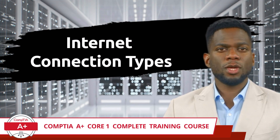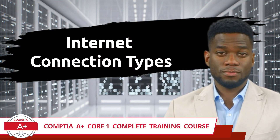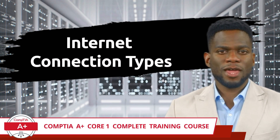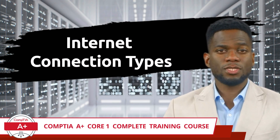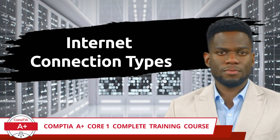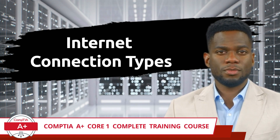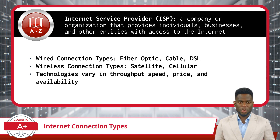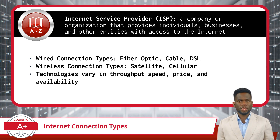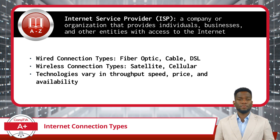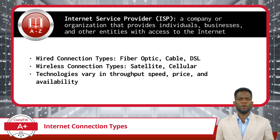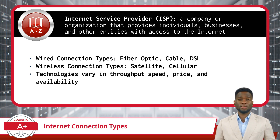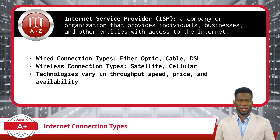CompTIA A Plus Core 1 Complete Training Course, Exam Objective 2.7: Compare and Contrast Internet Connection Types, Network Types, and Their Features. An Internet Service Provider, or ISP, is a company or organization that provides individuals, businesses, and other entities with access to the Internet. ISPs are responsible for connecting customers to the Internet through various technologies. Wired technologies include fiber optics, cable, and DSL.